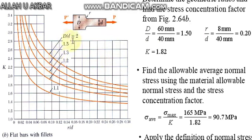D by d equals 2, D by d equals 1.5, 1.3 are there, but we choose 1.5 because our D by d equals 1.5. Then we have r by d along the x-axis, which is 0.20.